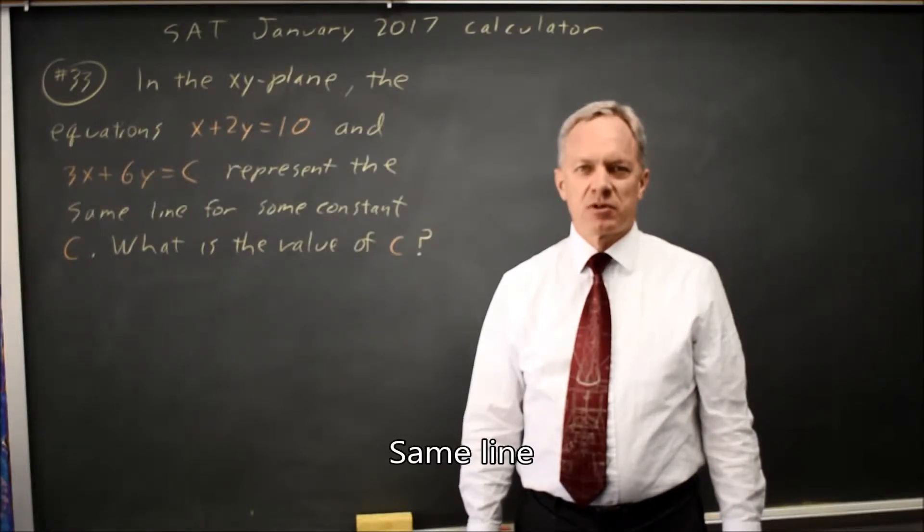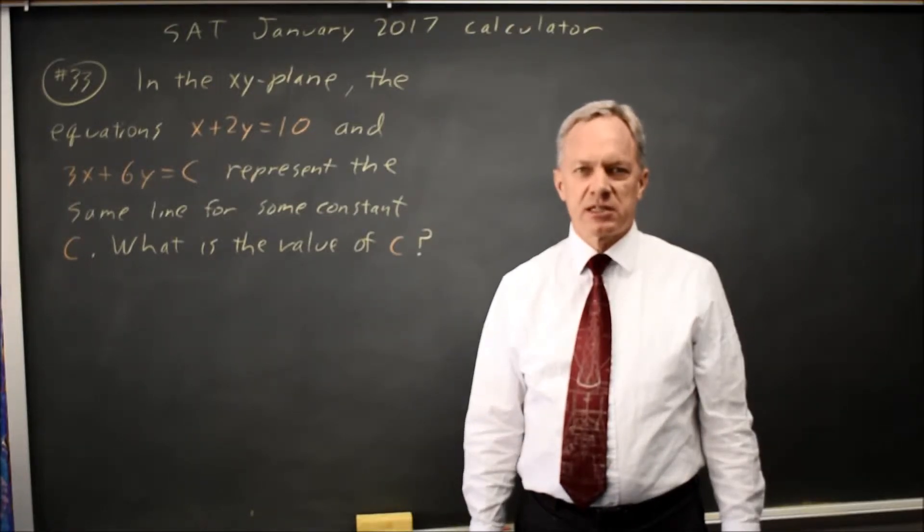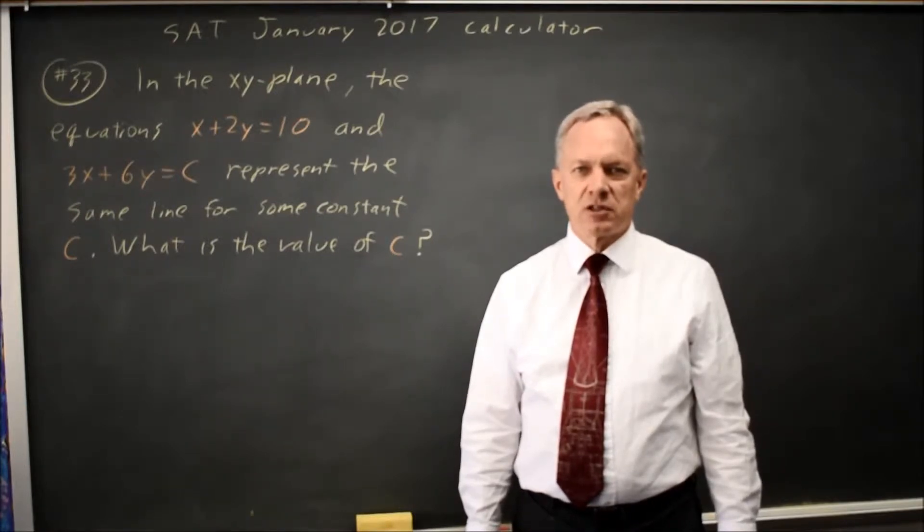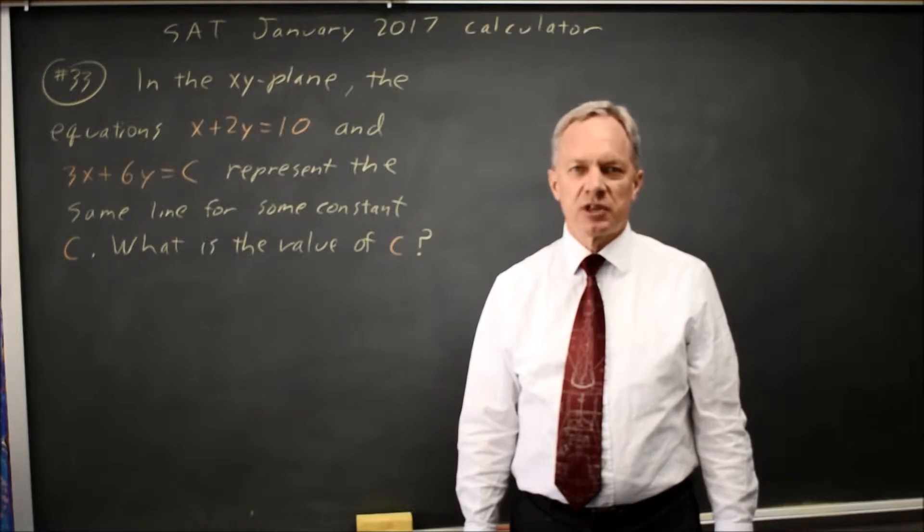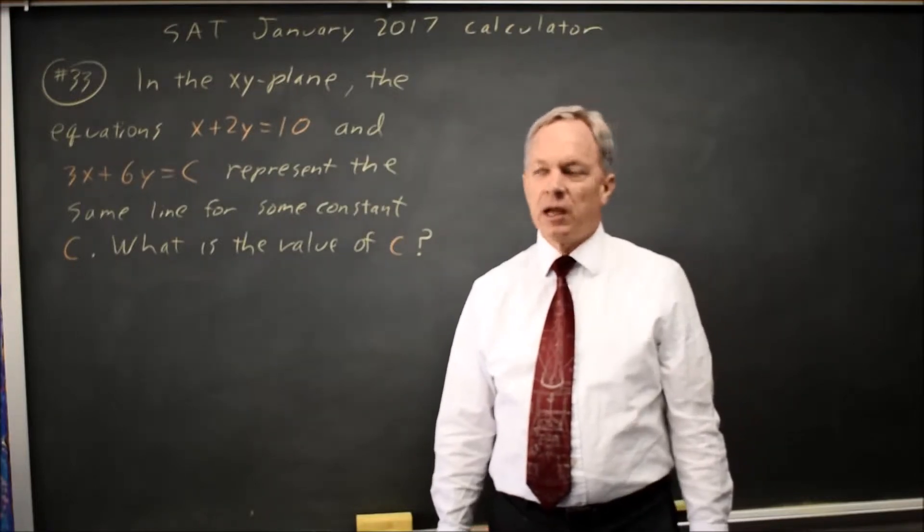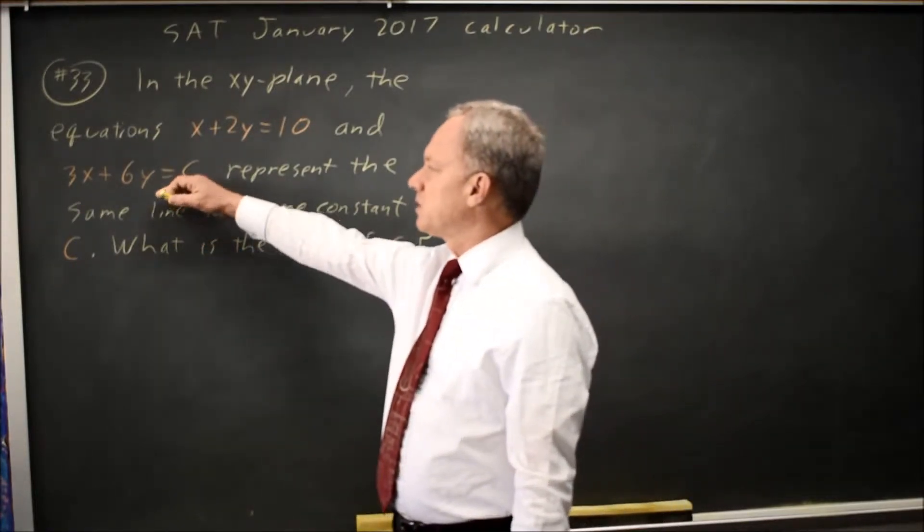This is calculator question number 33 from the January 2017 SAT, which is also practice test 8 in the 2018 version of the College Board Prep Book. We're given two equations of a line and told they're the same line, and they ask us to solve for C in the second equation.